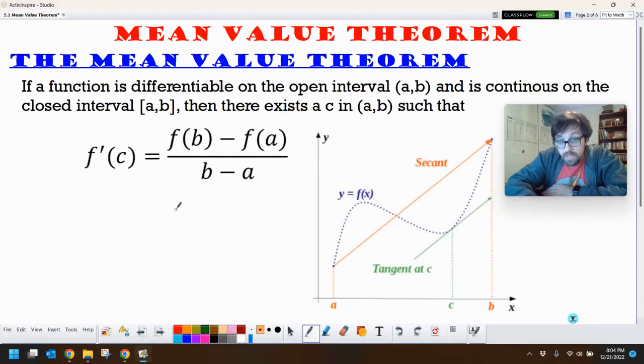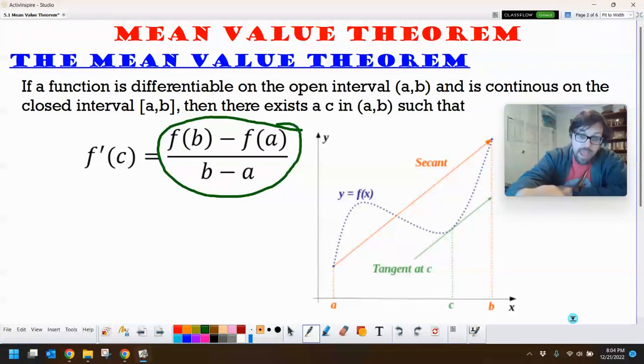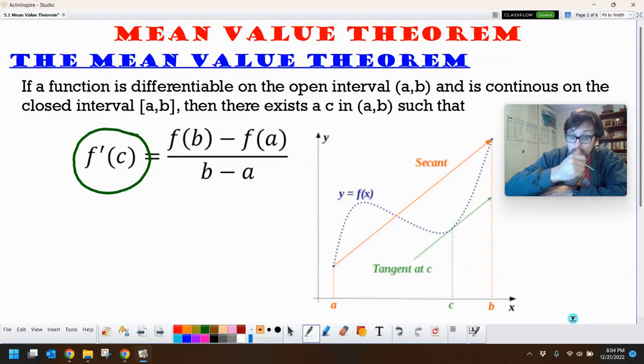What the Mean Value Theorem states is if we are differentiable on an open interval and continuous on a closed interval, basically saying we don't need to be differentiable at the endpoints, we just need to be continuous there, then we get this. The average rate of change being the same as our derivative.